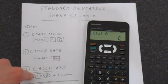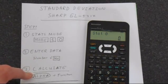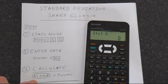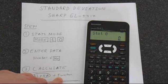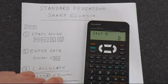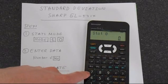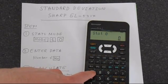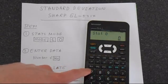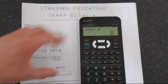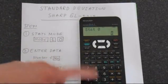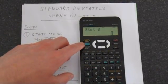And finally you do the calculation by pressing alpha followed by the function that you want to do. You'll find that the statistics functions that you use are written in green above the numbers, and the green functions are accessed using the alpha button.